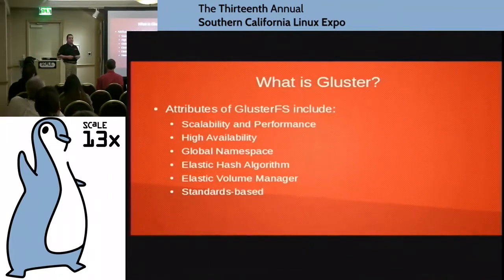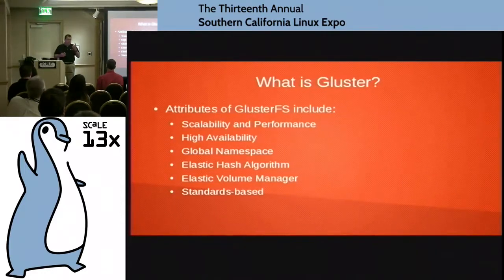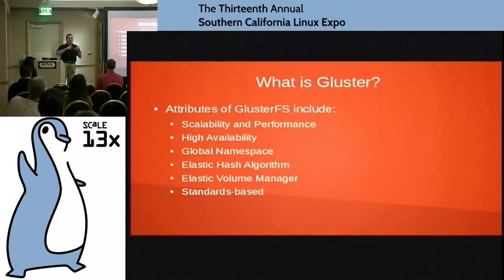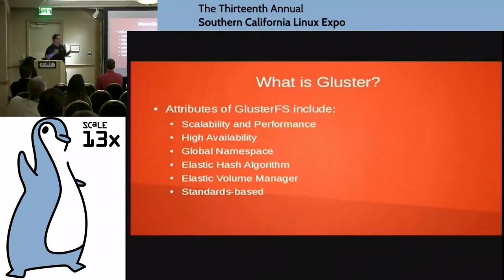The neat thing about the way Gluster does it is every one of the machines actually understands — based on the cluster name, the host name, the directory tree, timestamps, and all kinds of things — the map of where files are located. If I've got a client node running the Gluster client software and I want to look a file up, I don't have to go ask a metadata manager. I just figure out what the hash is for it, and that tells me exactly where to go in the cluster. Access times are low and reliability is high.